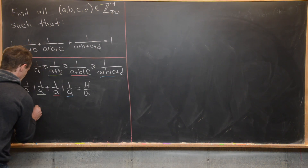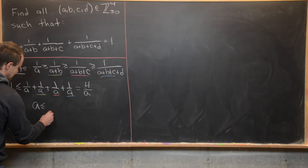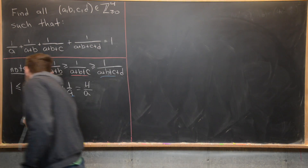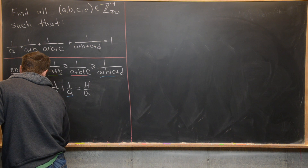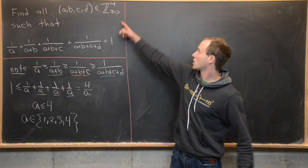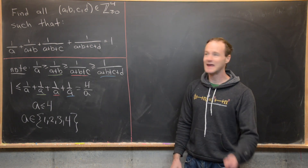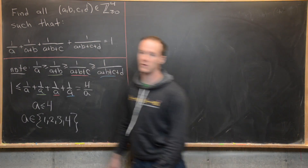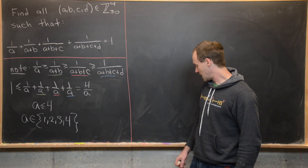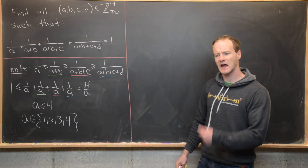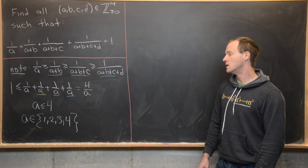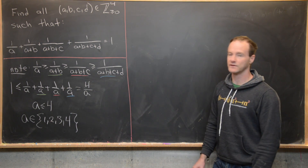Cross-multiplying gives us A ≤ 4. So A is in the set {1, 2, 3, 4}. We're working over non-negative integers, but A can't be 0 because we have 1/A. We have those four possibilities and will do a case-by-case analysis, though we won't do all cases — we'll do a couple and solve the rest in Mathematica.